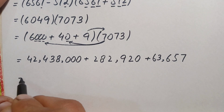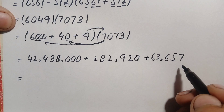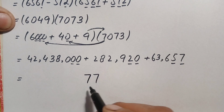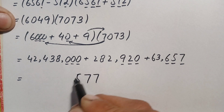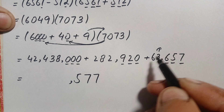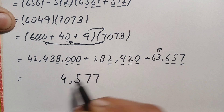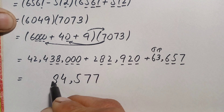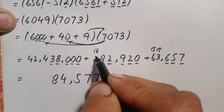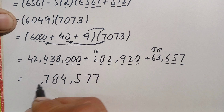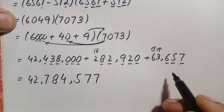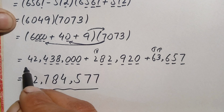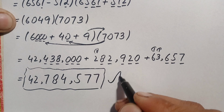Finally, we add the three partial products: 42,438,000 plus 282,920 plus 63,657. Starting from the ones place: 7 plus 0 plus 0 is 7; 5 plus 2 is 7, plus 0 is 7; 6 plus 9 is 15, plus 0 is 15, write 5 carry 1; 3 plus 1 is 4, plus 2 is 6, plus 8 is 14, write 4 carry 1; 6 plus 1 is 7, plus 8 is 15, plus 3 is 18, write 8 carry 1; 2 plus 1 is 3, plus 4 is 7. The addition gives us 42,784,577. So the final answer is 42,784,577.